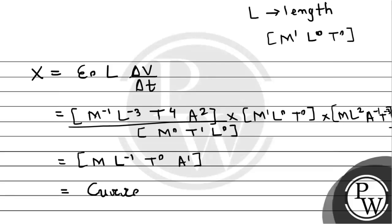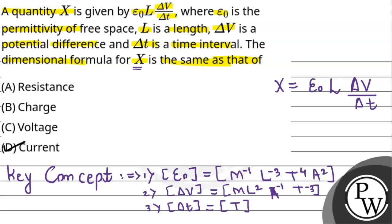So the result is simply ampere — A¹ — which is the unit of current. Note a correction: for length L, the dimensional formula is L¹ (not M¹ as misstated earlier), so M becomes M⁰ and L also becomes L⁰. Only ampere remains. So the unknown quantity X has the dimensional formula of current, which means option D is correct.